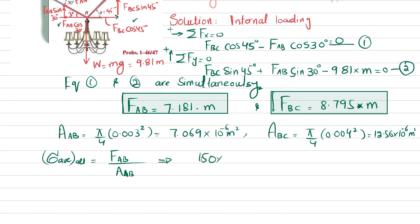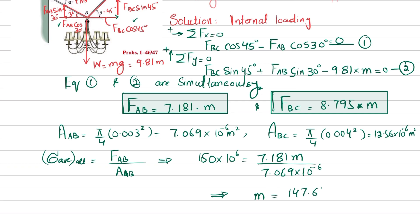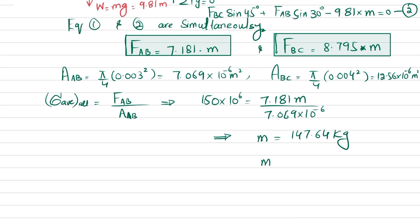For rod AB: 150 × 10⁶ = (7.181·m) / (7.069 × 10⁻⁶). Solving gives mass = 147.64 kg, which rounds to 148 kg.